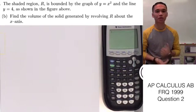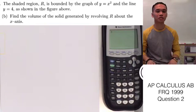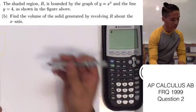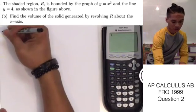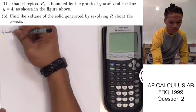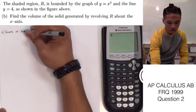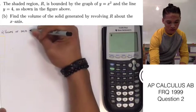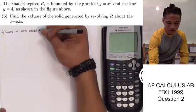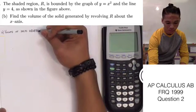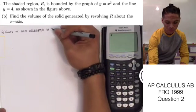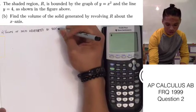So with this, we don't have to worry about changing our functions in terms of y. We can just leave it and use our top minus bottom. And we're looking for volume of solid generated by revolving R about the x-axis.